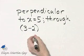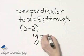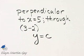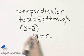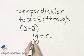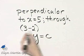Now, horizontal lines all have the equation of the form y is equal to some constant. In this case, the constant will be this y value since we want the perpendicular line through this point.